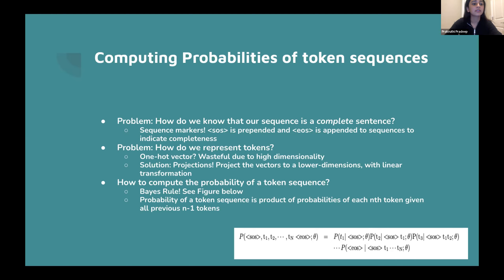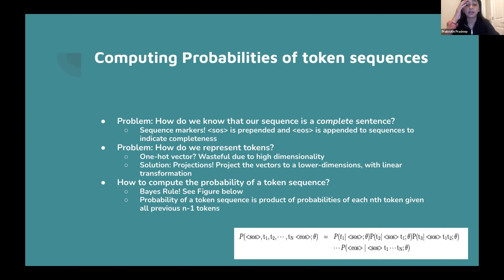A start-of-sequence marker, represented as SOS, indicates a token sequence has just begun and is prepended to our sequences. The symbol immediately following the SOS tag is the first token. The end-of-sequence marker, EOS, indicates the end of a complete sequence — it's not the final token itself, just a marker. For convenience, sometimes the same token is used for both SOS and EOS.